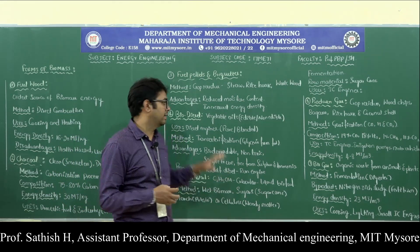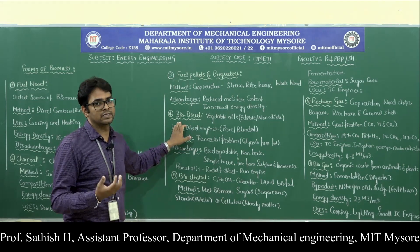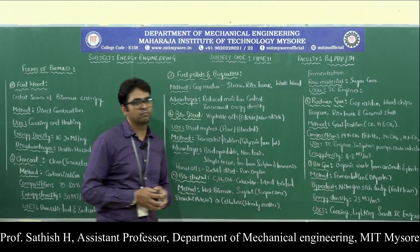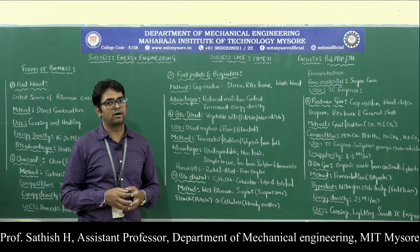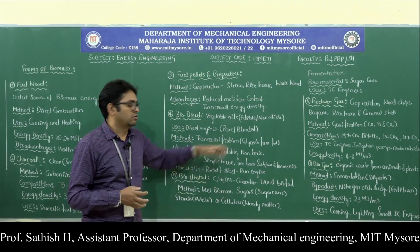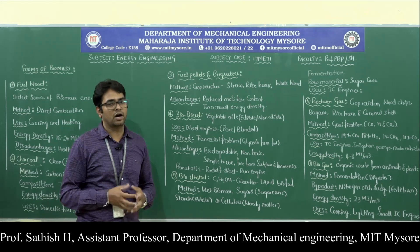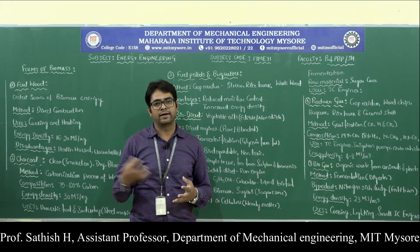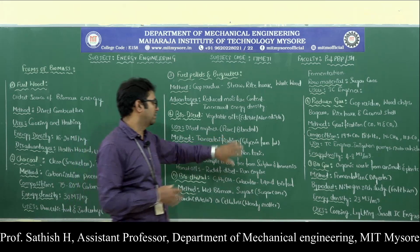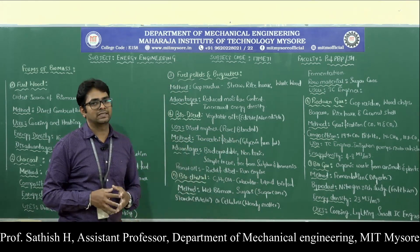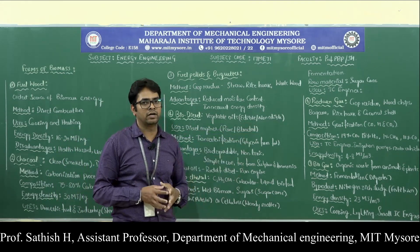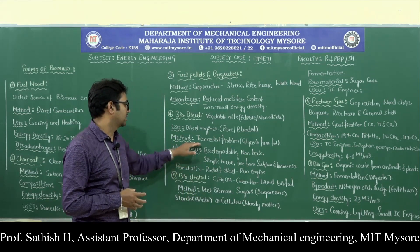Biodiesel is extracted from vegetable oils — either edible or non-edible oil. It is used in diesel engines. You can use this biodiesel in pure form, or you can blend it with diesel from fossil fuels and use that as a biofuel in pure or blended form. The method through which biodiesel is extracted from vegetable oils is called transesterification.